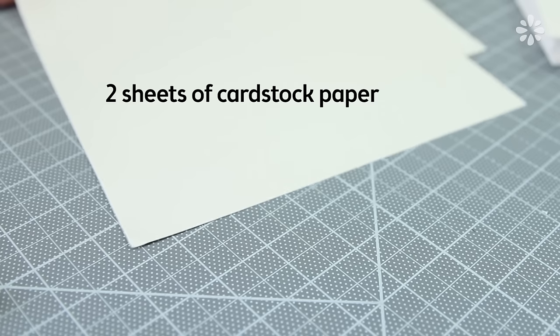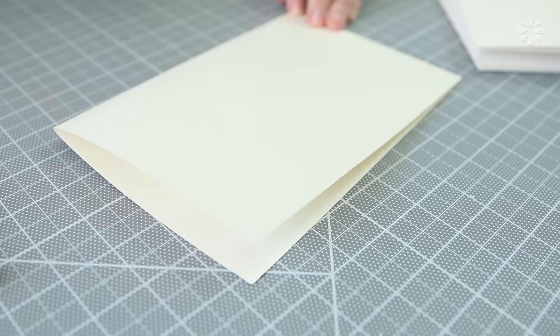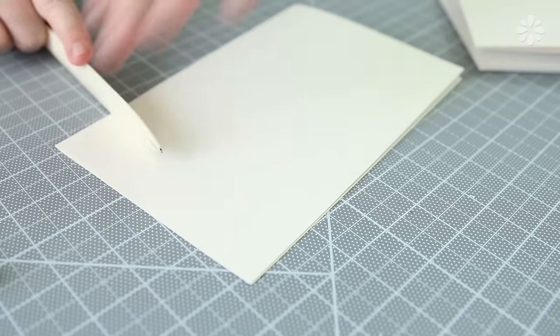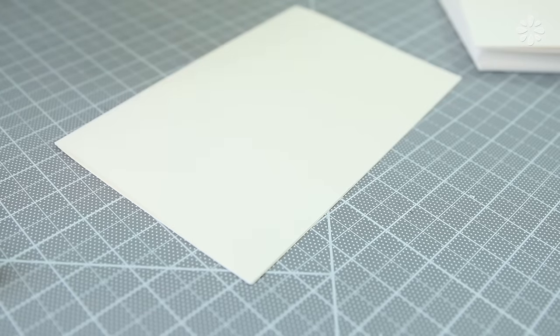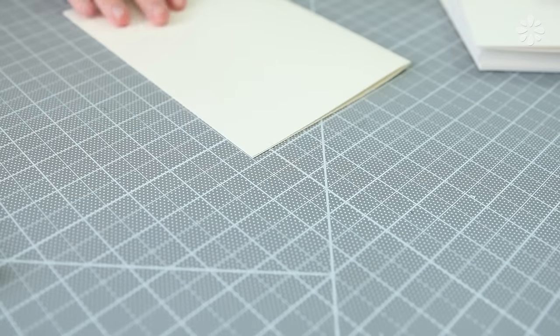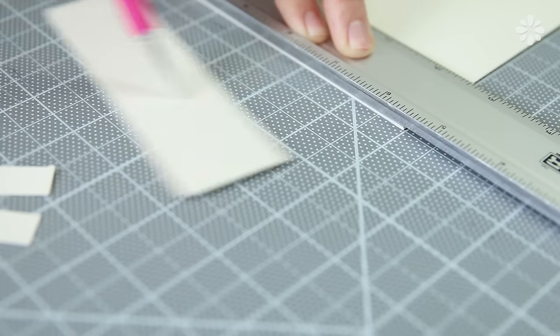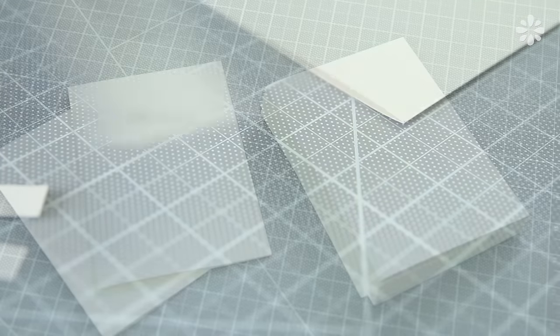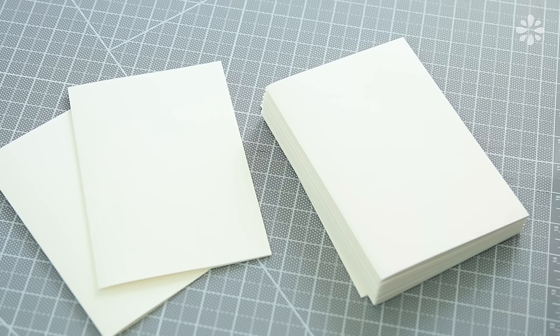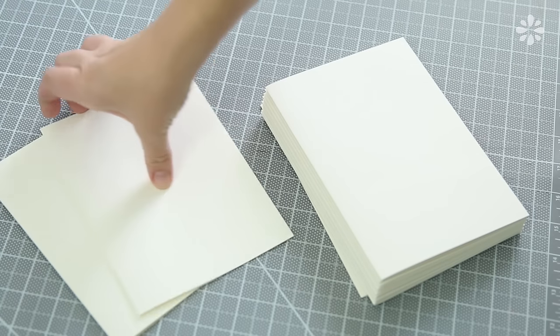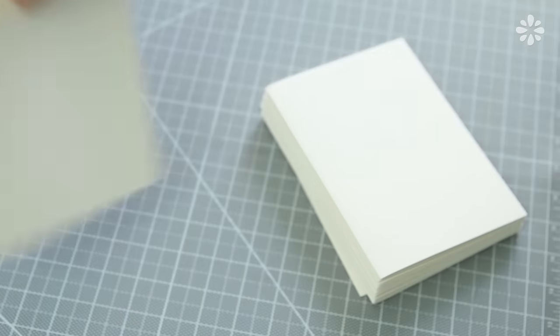For the end pages, I'm using a thicker paper that's more like a card stock in the same color, and I'm going to repeat that process. Fold them in half and trim those to five by seven so that they're the same size as all of the signatures. So now I have two end pages for the front and back cover and 13 signatures.